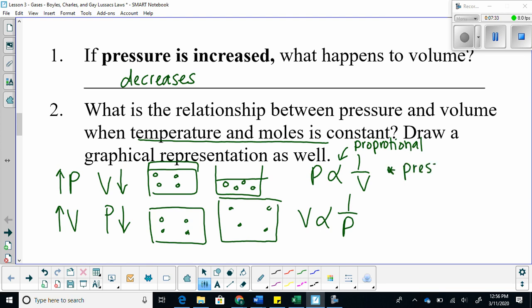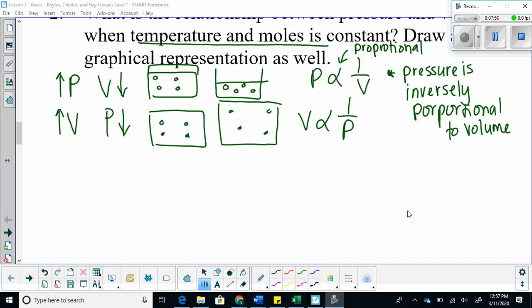Let's write this relationship in words. Pressure is inversely proportional to volume. That means if one increases, the other decreases. If the other decreases, the other increases. One last thing: pressure is inversely proportional to volume at constant moles and temperature.